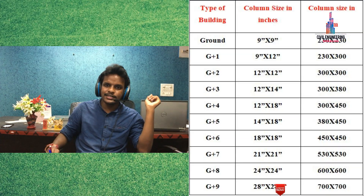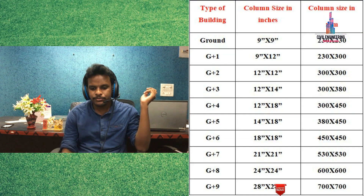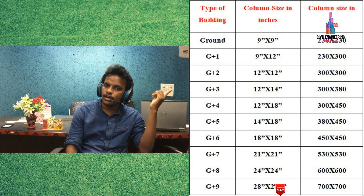Now I will explain the minimum column sizes for different story buildings — ground story, G+1, G+2, G+3, G+4, and so on. Please follow the left-hand side screen, which shows the type of building, column size in inches, and column size in millimeters.